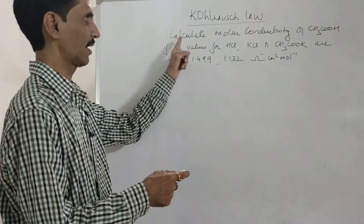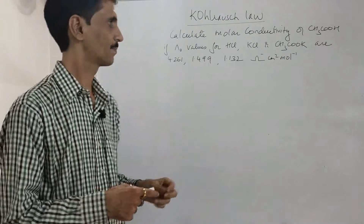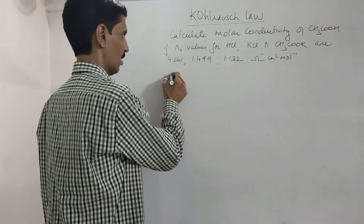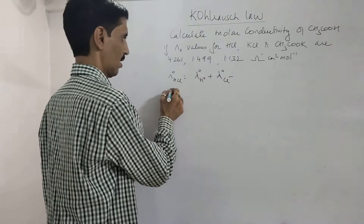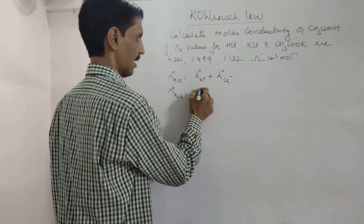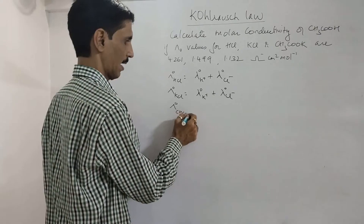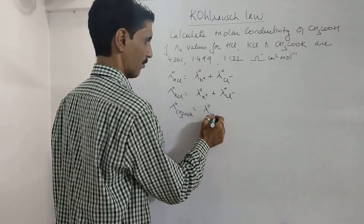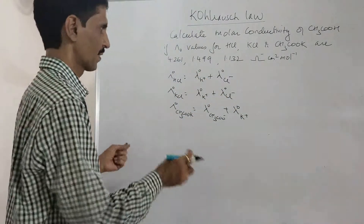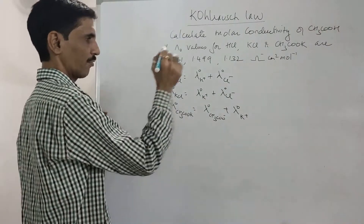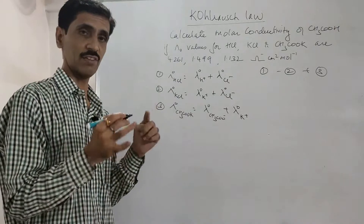The next numerical is about calculating the molar conductivity of acetic acid, given molar conductivity values of HCl, KCl, and potassium acetate. According to Kohlrausch's law: λ⁰(HCl) = λ⁰(H⁺) + λ⁰(Cl⁻); λ⁰(KCl) = λ⁰(K⁺) + λ⁰(Cl⁻); λ⁰(potassium acetate) = λ⁰(K⁺) + λ⁰(CH₃COO⁻). Acetic acid is made up of CH₃COO⁻ and H⁺.